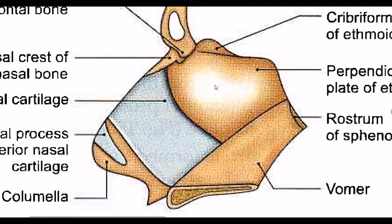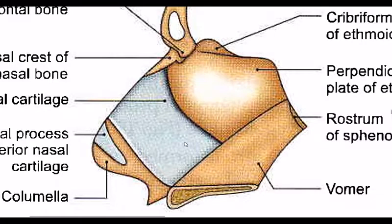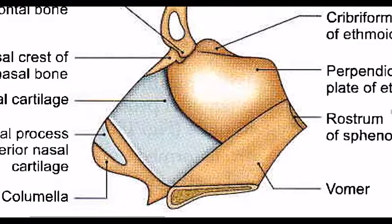The bony parts include the perpendicular plate of the ethmoid, nasal bone, and nasal spine of the frontal bone. The cartilaginous part is the septal cartilage. We also have the inferior nasal cartilage. The anterior part of the inferior portion is called the columellar end, and it consists of fibro-fatty tissue. The lower margin is also called the lower margin.